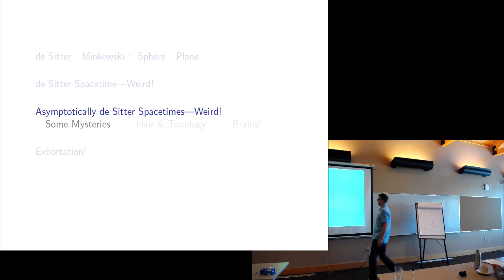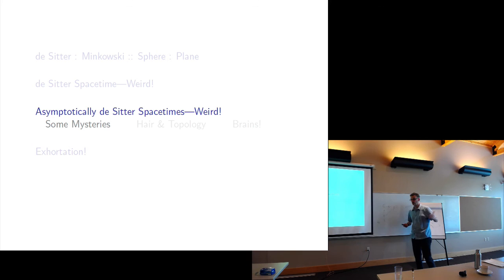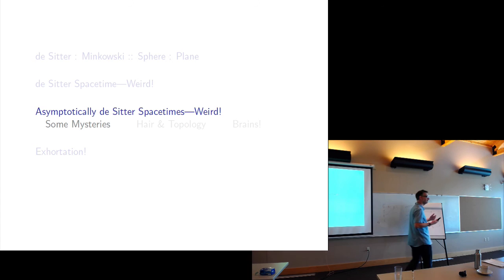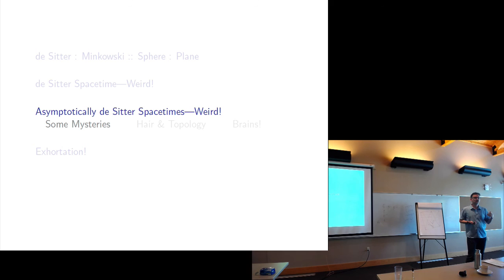Now let's talk about asymptotically de Sitter spacetimes. We don't think we live in Minkowski spacetime — even when lambda was thought to be zero, we could see there was matter everywhere. For the same reason, we don't think we live in de Sitter spacetime. But if lambda is positive, de Sitter spacetime might be an interesting model — the simplest positive-lambda spacetime — and there are several interesting senses in which, when you have positive lambda, it becomes nearly inevitable that your future will be de Sitter-like.